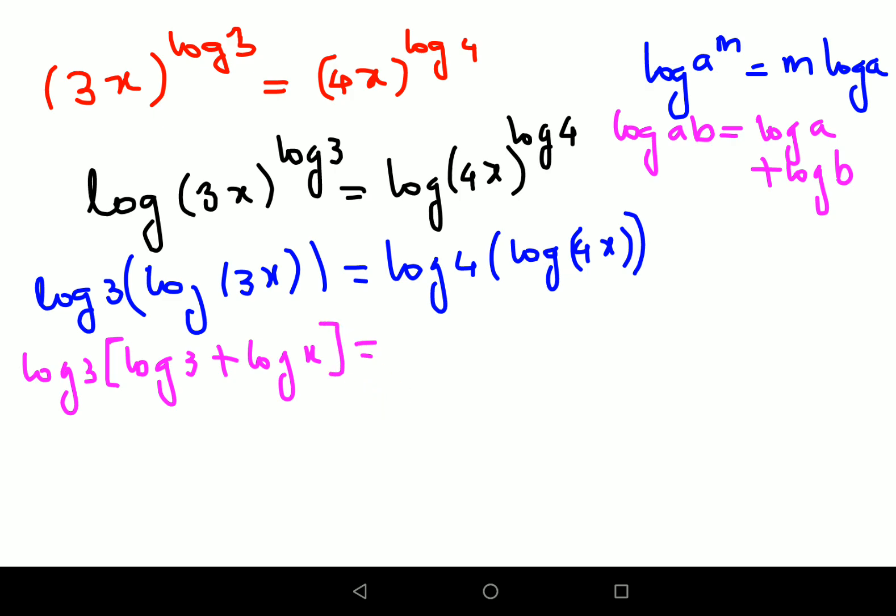And here we have log 4 into log 4 plus log x. Now let's multiply things inside. We have log 3 the whole square, which can be written as nothing but log 3 squared.